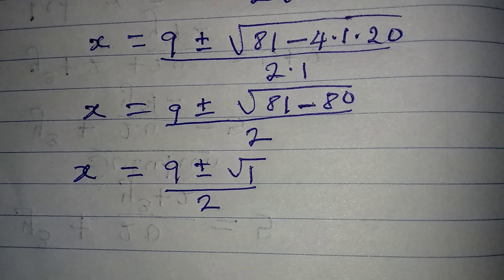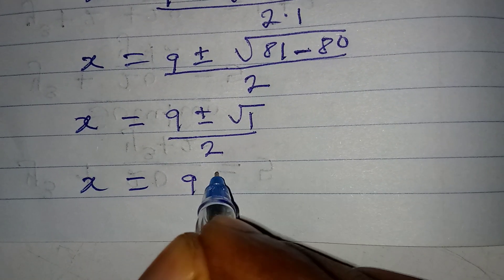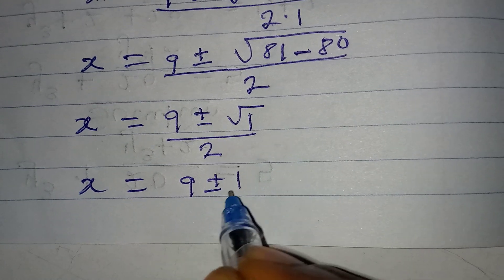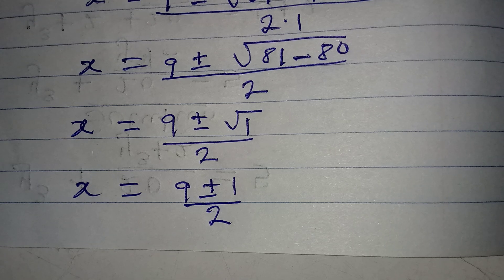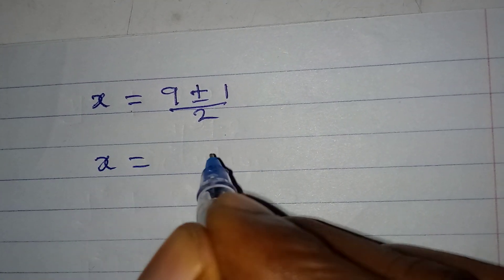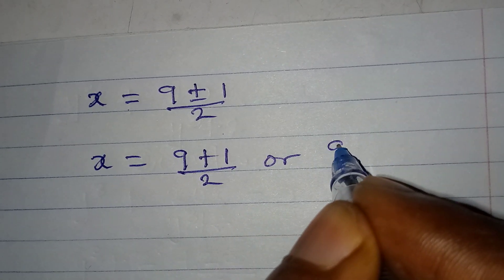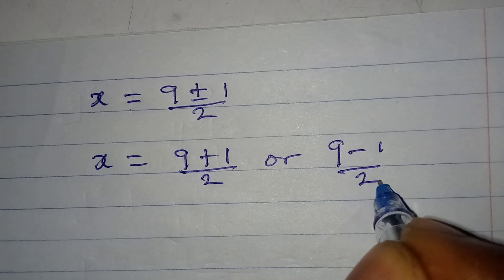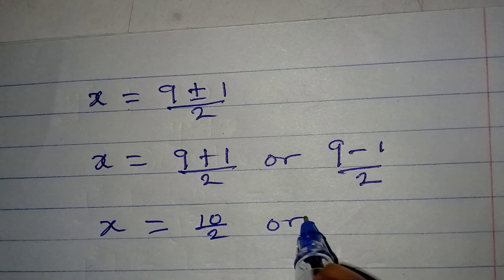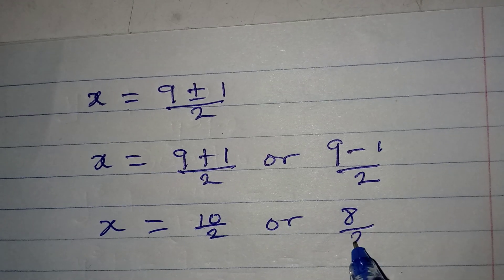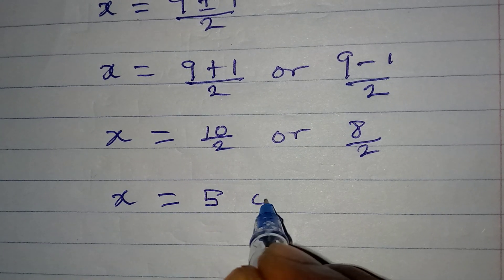Continuing, √1 = 1, so x = (9 ± 1) / 2. This means x = (9 + 1)/2 or (9 - 1)/2, giving x = 10/2 or 8/2, so x = 5 or x = 4.